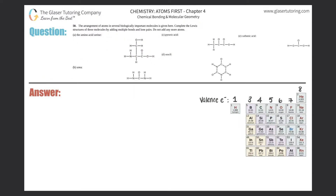Number 50. The arrangement of atoms in several biologically important molecules is given here. Complete the Lewis structures of these molecules by adding multiple bonds and lone pairs. Do not add any more atoms.